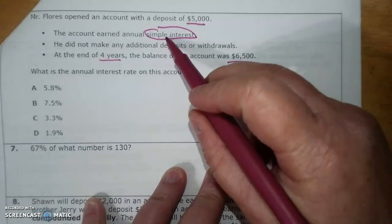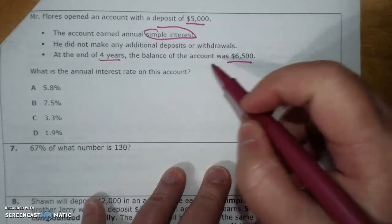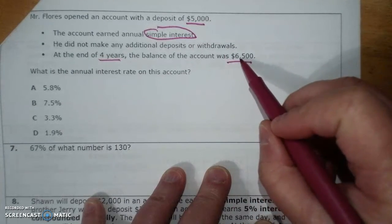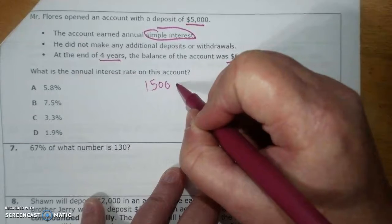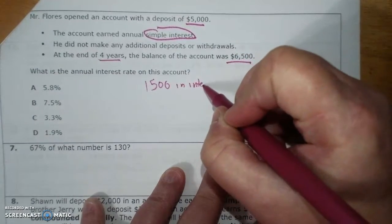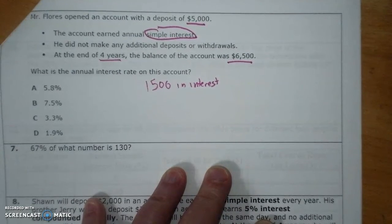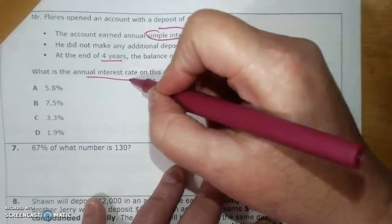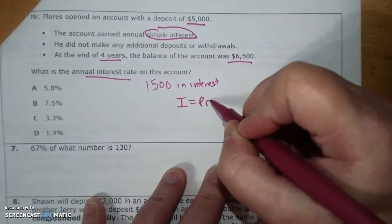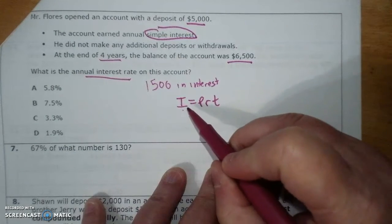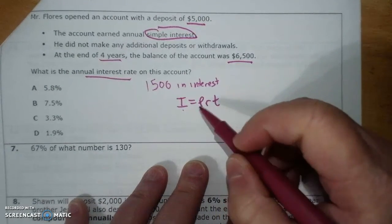So remember our simple interest has the I, so we have to find out the interest. If I have that at the end and that at the beginning, I had $1,500 in interest. And it said what is the annual rate? So the formula is I equals PRT. I know my I, I know my P, and I know my T, so I'm going to have to find my R.